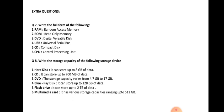Dear student, let us go through some extra questions related to the chapter. Write the full form of the following: RAM — Random Access Memory. ROM — Read Only Memory. DVD — Digital Versatile Disk or Digital Video Disk. USB — Universal Serial Bus. CD — Compact Disk. CPU — Central Processing Unit.